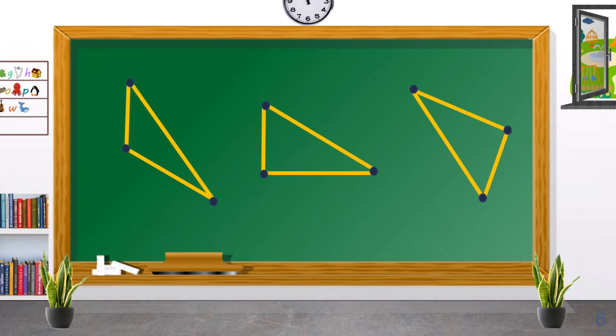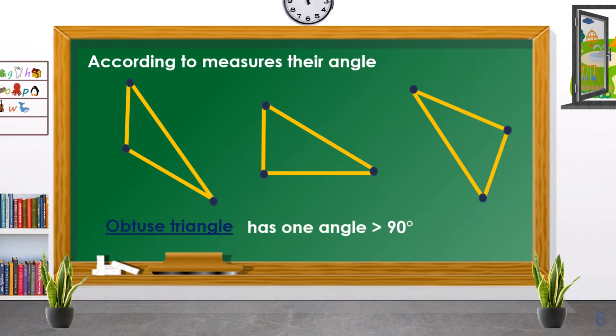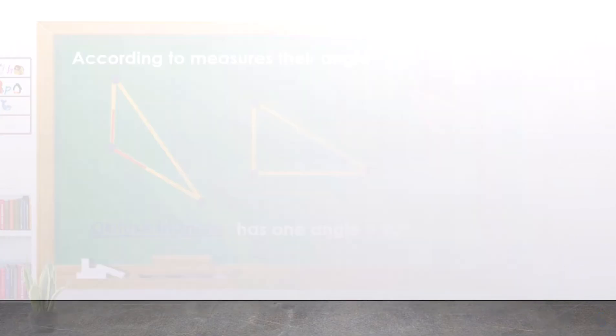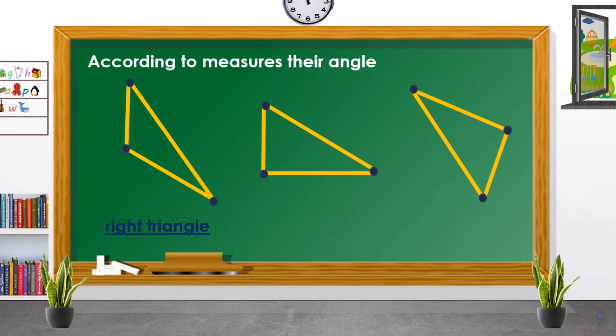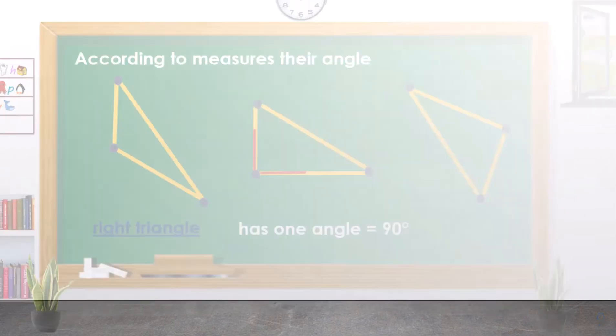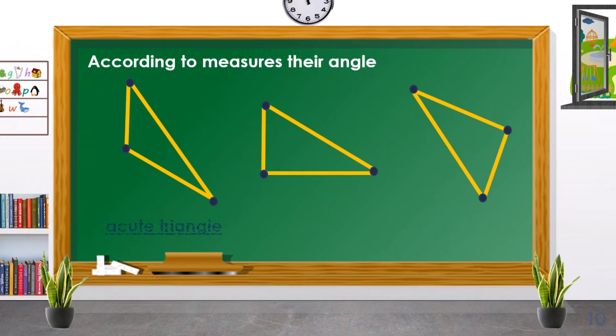Triangles can be classified according to the measures of their angles. First, we have an obtuse triangle. It has one angle greater than 90 degrees. Next is the right triangle. The right triangle has one angle equal to exactly 90 degrees. And lastly, we have the acute triangle. Acute triangle has three angles with less than 90 degrees.